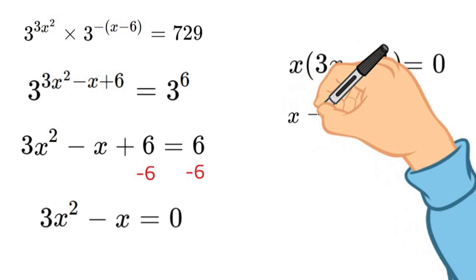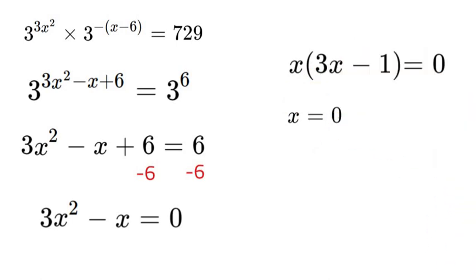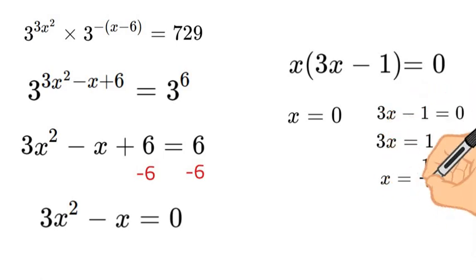So therefore x equals 0 can just be 0. Now the right side of the equation 3x minus 1 will need to solve for 0 as well. So we'll add 1 and then we'll divide by 3 and we'll have x equals 1 third.